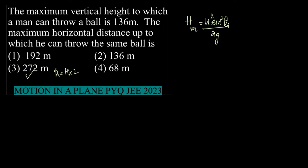Theta should be 90, not 45. Therefore, we get sin²90 which is 1, and therefore the maximum height is equal to u²/2g. The given value here is 136 meters, so we have u²/2g given to be 136 meters.